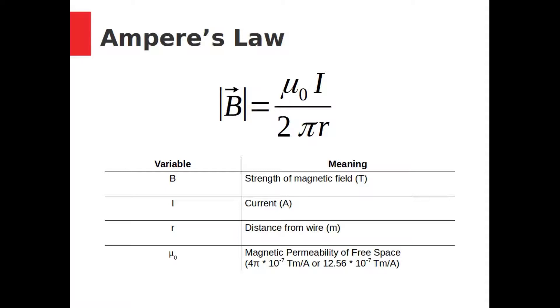In a few weeks we will see why. For the moment we will just treat it as a constant. Its value is 4 times pi times 10 to the power of negative 7 tesla meters per ampere. That works out to 12.56 times 10 to the negative 7 tesla meters per ampere.